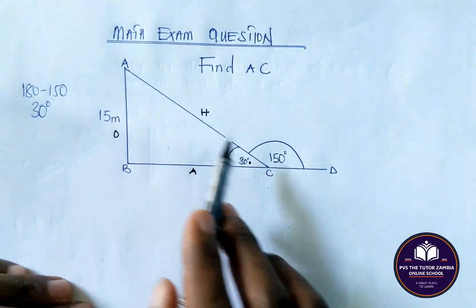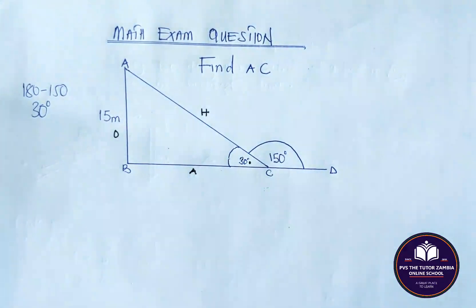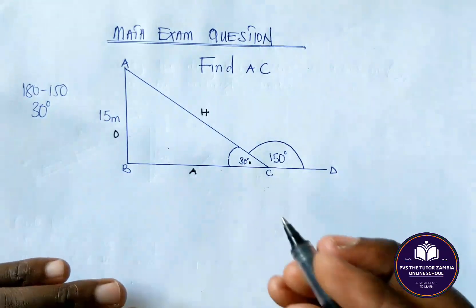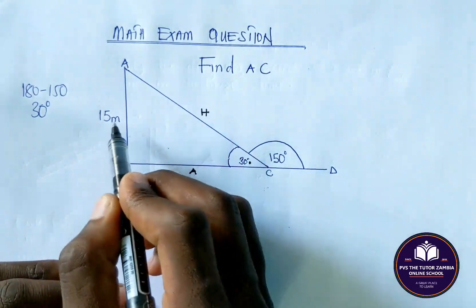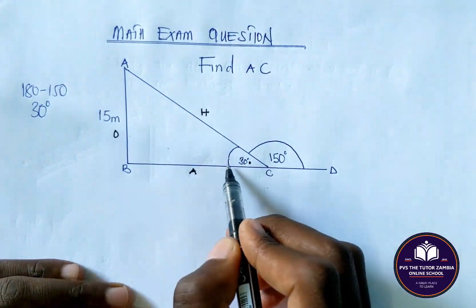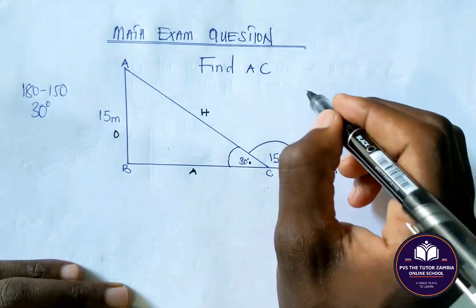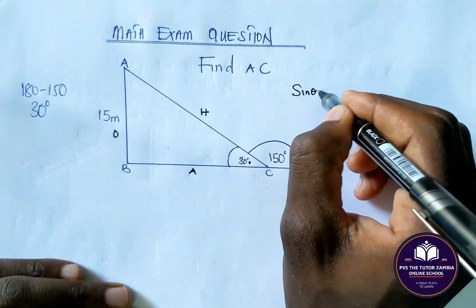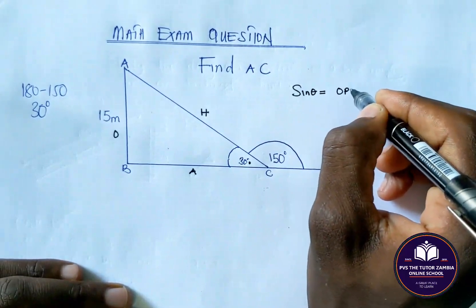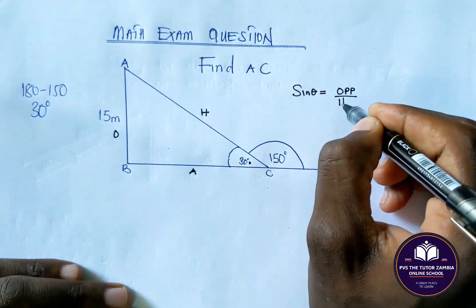So for us to find AC, which is our hypotenuse, which trigonometry ratio are we going to use? We are going to use sin theta from SOHCAHTOA because we are looking for the hypotenuse. We have the opposite and we have the angle. And you know that sin theta is equal to opposite over hypotenuse.